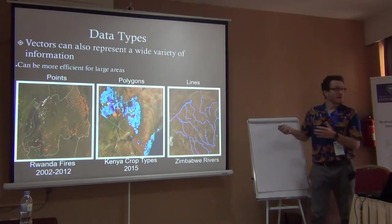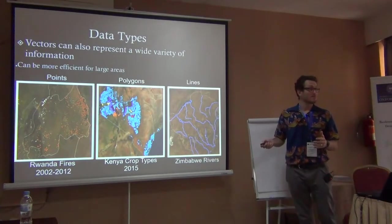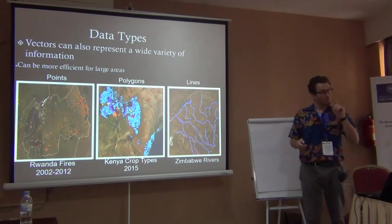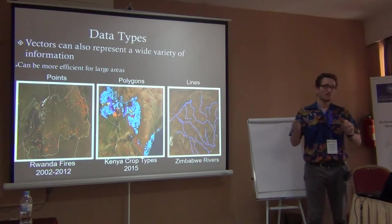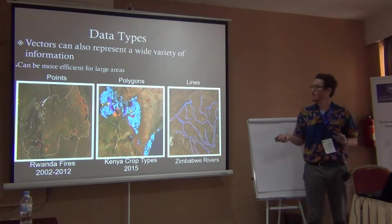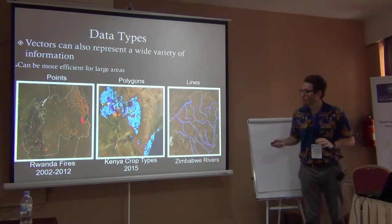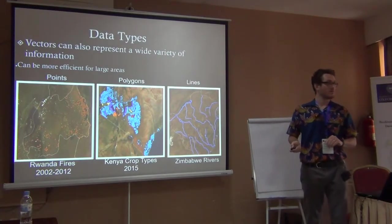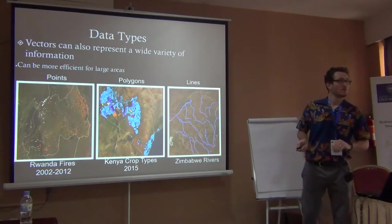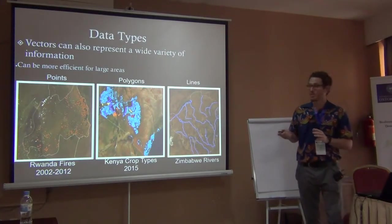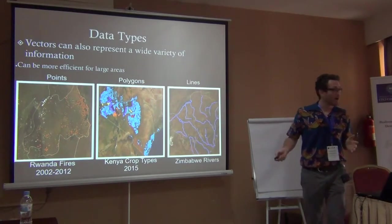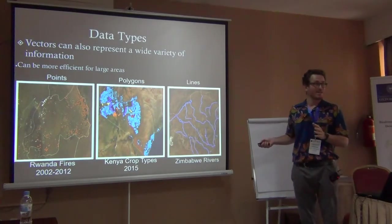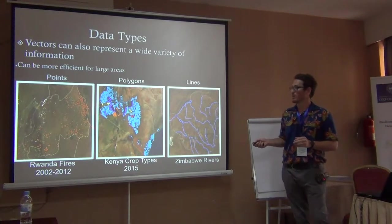Vector can come in a lot of different formats. The simplest is a point — we just have points, and each point is a value. In this case, we have Rwanda fires from 2002 to 2012, with each incidence of an observed fire in those 10 years represented by a point.